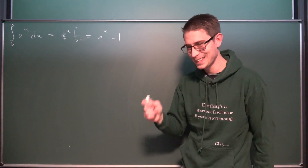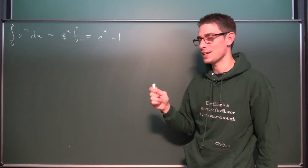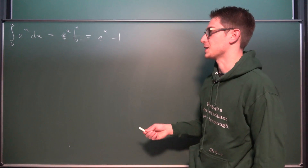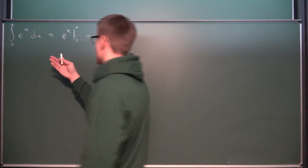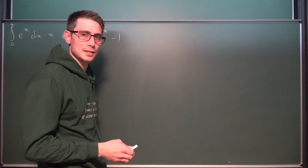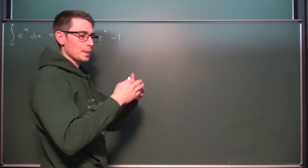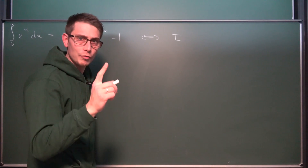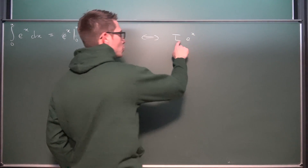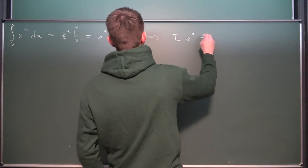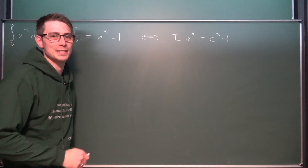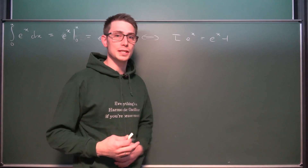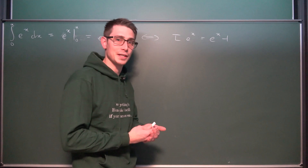Now we are going to do some functional analysis — some functional operator fiddling. What we are going to do is define a real operator: namely the integral, which we'll call I — it's an integral operator. In functional analysis you deal with real and complex operators and how they work under certain norms. We are going to rewrite this equation as I applied to e^x, where I has bounds from 0 to x, equals e^x − 1. This is something you always find in quantum mechanics — you deal with operators and manipulate them.